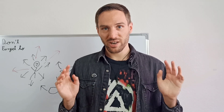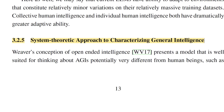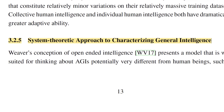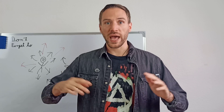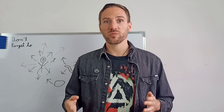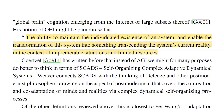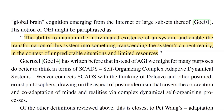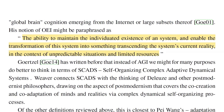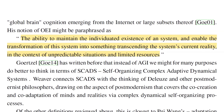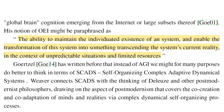Let's move on to my favorite approach: the system-theoretic approach to characterizing general intelligence. This approach talks about the importance of open-ended intelligence, which is explained as the ability to maintain the individuated existence of a system and enable the transformation of the system into something transcending the system's current reality, in the context of unpredictable situations and limited resources.